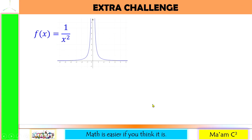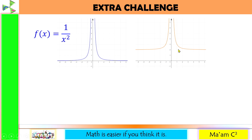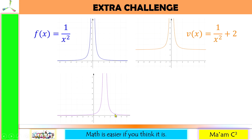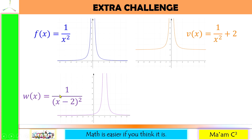Let us transform this graph. What if the graph moved two units up? The mother function will have plus 2 at the right, giving v(x) = 1/x² + 2. Now what if the graph moved two units to the right? The changes occur in the denominator, giving 1/(x − 2)². Remember: minus 2 in the denominator means the graph moves to the right by 2 units.